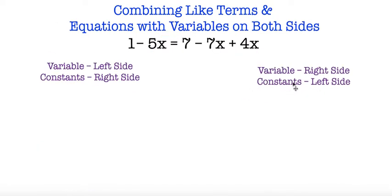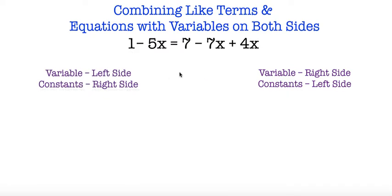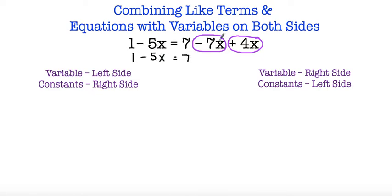So here I have a different example. First we're going to check for like terms. On the left side I have 1 minus 5x — those are not like terms. On the right side I have 7 minus 7x plus 4x — I do have like terms: negative 7x and positive 4x. So if I rewrite this I have 1 minus 5x is equal to 7. Since the signs are opposite I subtract, ending up with 3x, and I keep the sign of the number with the greatest absolute value, which is negative 7x. So negative 3x.